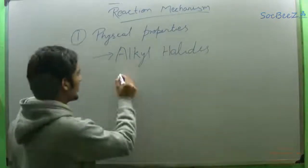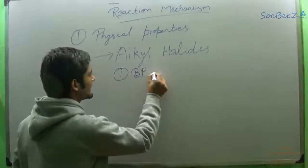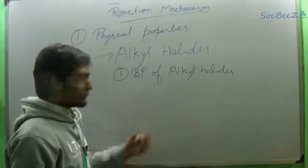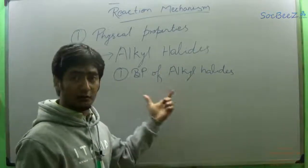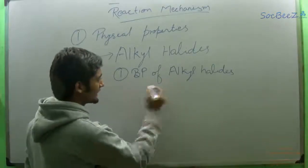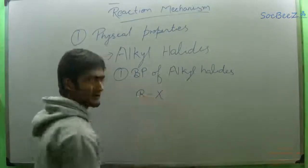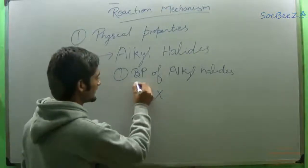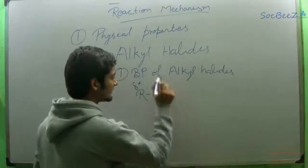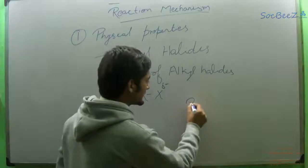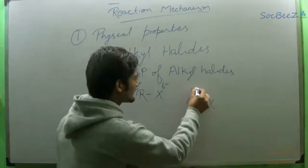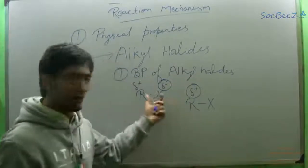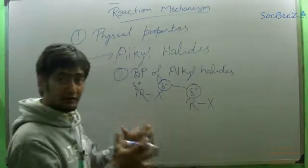Suppose we discuss the boiling point of alkyl halides. While discussing the boiling point, we will consider the intermolecular forces between different molecules of alkyl halides. As we have discussed earlier, alkyl halide has a polar R-X bond — that is, the alkyl and halide bond is polar in nature, having a partial positive charge on alkyl and a partial negative charge on halide. So if there is another alkyl halide molecule in the solution, this delta-plus partial positive charge on alkyl halide will interact with the partial negative charge on halide.